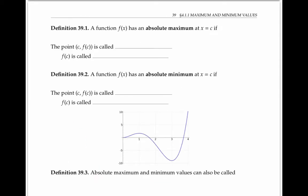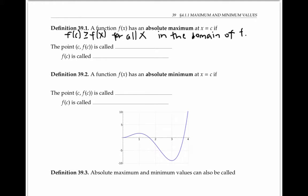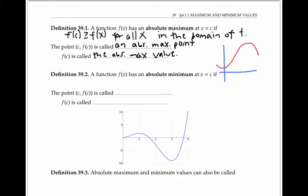A function f of x has an absolute maximum at the x value of c, if f of c is greater than or equal to f of x for all x in the domain of f. The point with coordinates c, f of c is called an absolute maximum point. And the y value f of c is called the absolute maximum value. In the graph of f, f of c is the highest value that the function ever achieves.